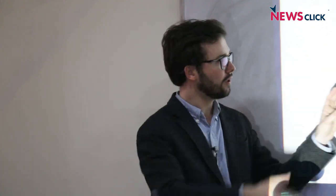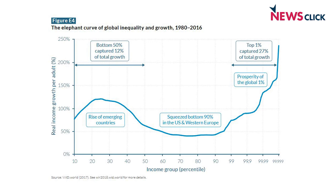Squeezing half of the world population on the left-hand side of a graph is not necessarily the best way to represent the importance in terms of population of this group. So we prefer a mixed representation, giving some space for the bottom 50% to show the importance in terms of population size, while also stretching the top 1% to show the importance in terms of the share of growth captured. This is one of the key results of this report: our so-called global elephant curve of inequality and growth.